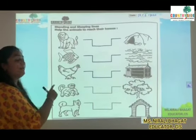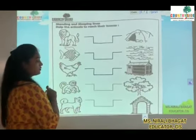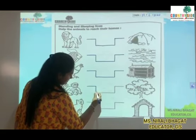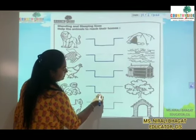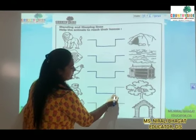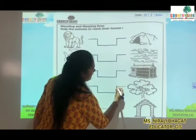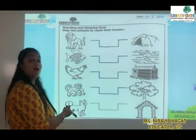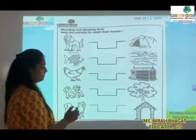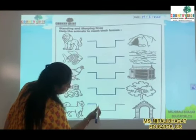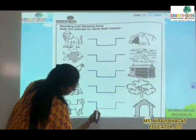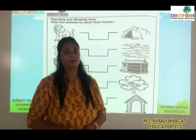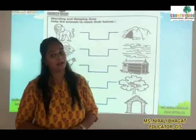Now monkey — we will help monkey reach its home. We will start from here, joining the dots, then standing line, then again standing line, then joining the dots, sleeping line, then standing line and reached. Now we have to help dog reach its home — by joining the dots we will help the animals reach their homes. This way you will complete this activity page.